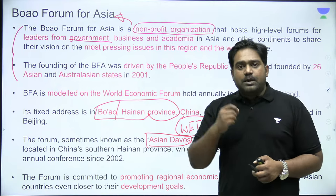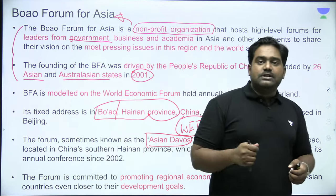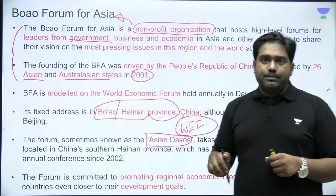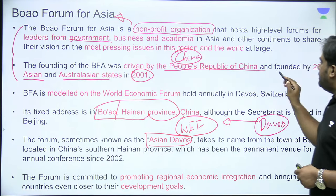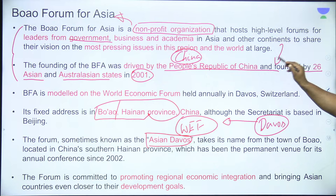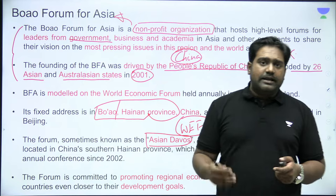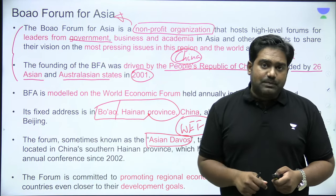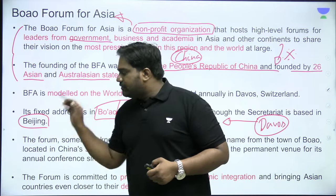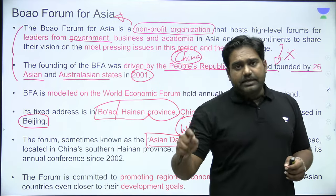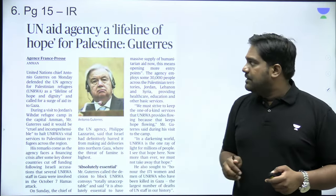26 countries were part of its establishment in 2001 — along with Australia, 25 other Asian countries under China's leadership. China is the leader of this forum. Several South Asian countries also participate, including Sri Lanka and sometimes Bangladesh. The secretariat of the forum is in Beijing, but the summit is held in Boao in Hainan province. These are basic facts that could be relevant for your prelims.